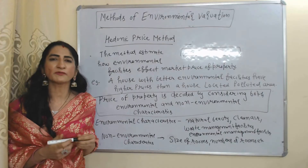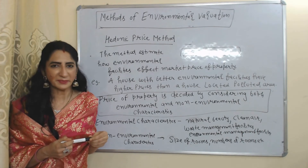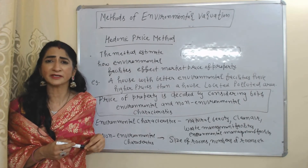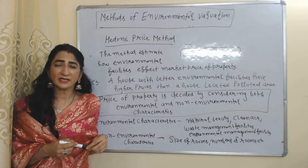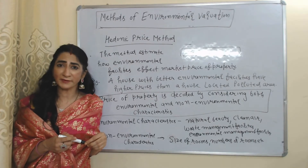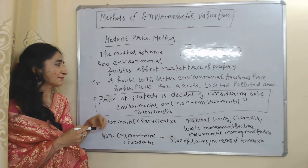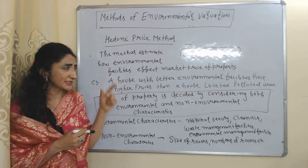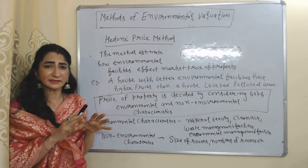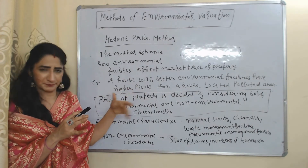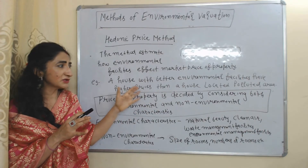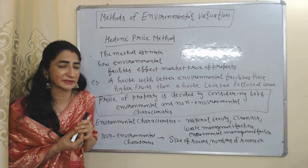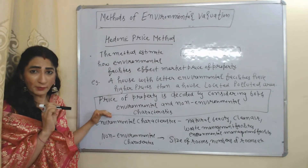The next important method of environmental valuation is the Hedonic Price Method. This method estimates how a change in environmental facilities affects the price of any property. For example, a house which has better environmental facilities has a higher price compared to a house located in a polluted area, and the difference in prices between both houses will be called the consumer's willingness to pay for better environmental facilities.